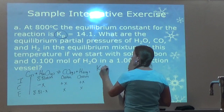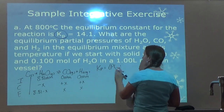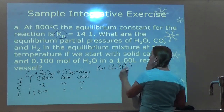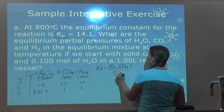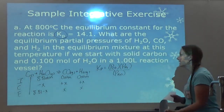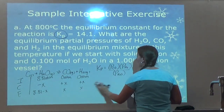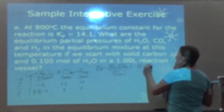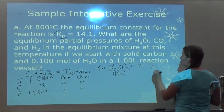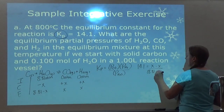I set up the KP expression. KP equals pressure of CO times pressure of H2 over pressure of H2O — carbon is a solid so it's not included. KP is 14.1, so: X times X over (8.81 minus X) equals 14.1, giving X² over (8.81 − X) = 14.1.